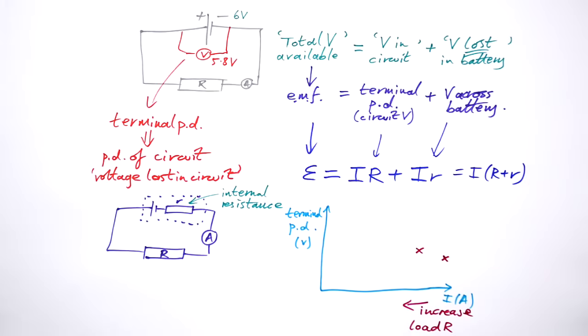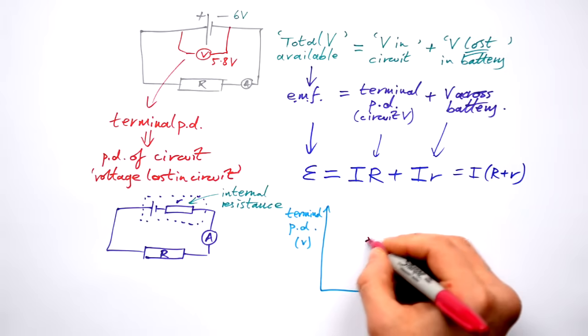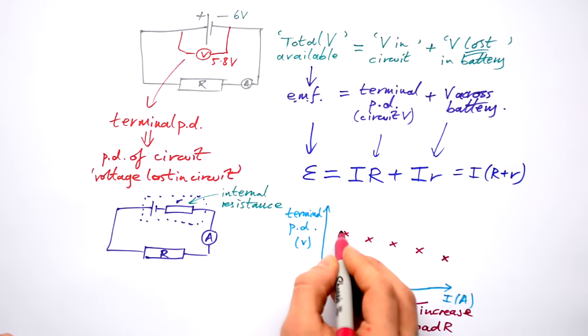then that means that the current gets less. So there's more voltage available for the circuit. Keep going back and back and back. And we end up with this line here.